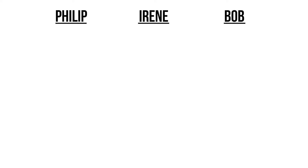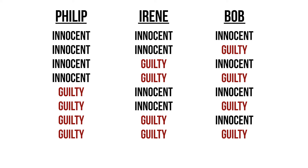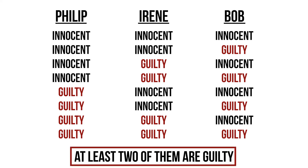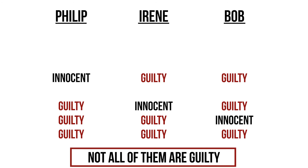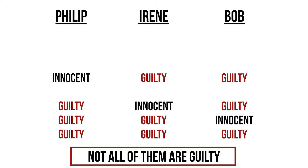Three suspects again provide us with eight possible situations. We happen to know that at least two of them are guilty, which means we can eliminate all possibilities in which none or just one of them is guilty. We also know that not all of them are guilty, so we can eliminate that situation as well.